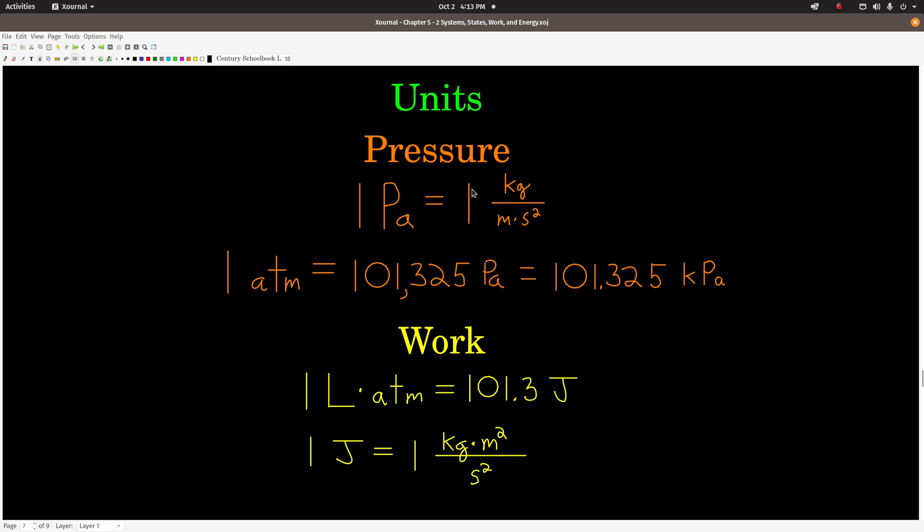Let's look at some units now. We will come back to units of pressure when we do the gas module, but for now these will suffice. A pascal is a unit of pressure, and in SI units it's one kilogram per meter second squared. An atmosphere is equal to 101,325 pascals, which is 101.325 kilopascals. We typically use atmospheres in chemistry.